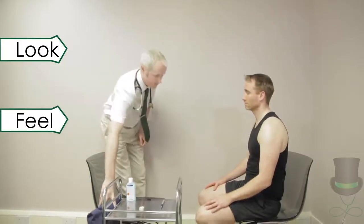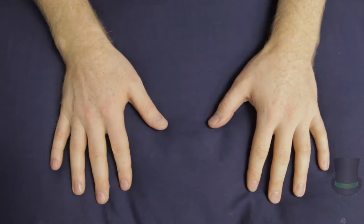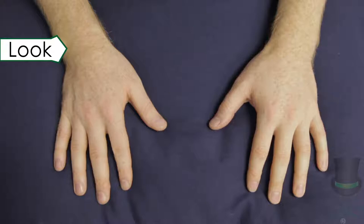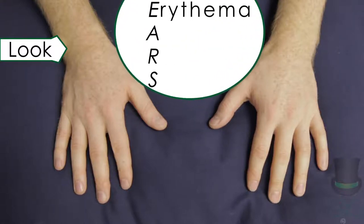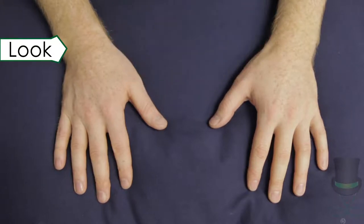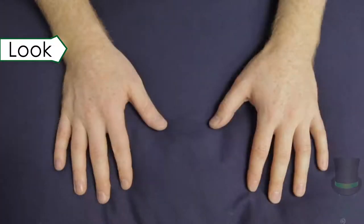When performing a rheumatological examination, you must look, feel and move every joint. The first joints examined are the joints of the hands. On examination of the hands, consider the skin, joints, muscles and nails. When looking at the skin, remember the mnemonic EARS — this stands for erythema, atrophy, rashes and scars. Start by looking at the skin of the dorsum of the hands using the mnemonic EARS. Then look at the palms. Next, look at the joints for swelling and deformities. There are several joint deformities that may be seen in rheumatological disease.